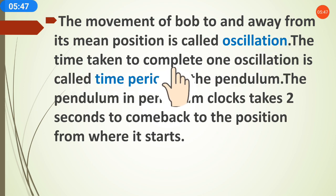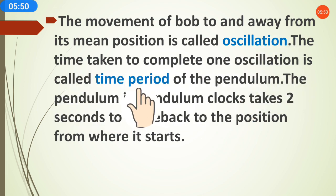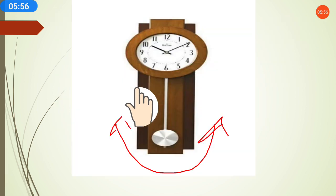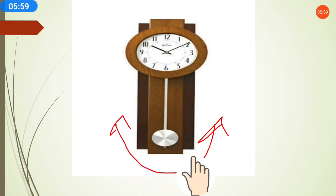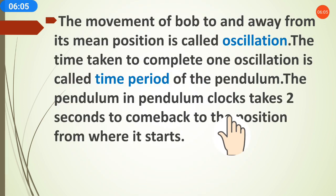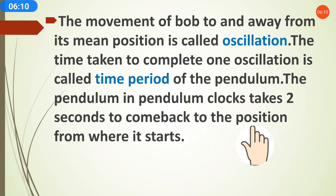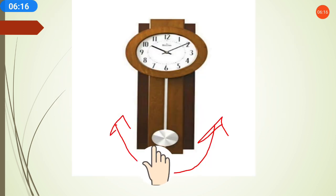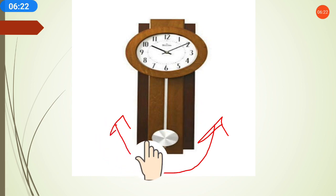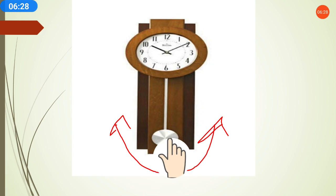The time taken to complete one oscillation is called the time period. The pendulum in a pendulum clock takes two seconds to come back to the position from where it starts — suppose it starts from here, goes to the other side, and comes back. It takes two seconds to return to its original position.